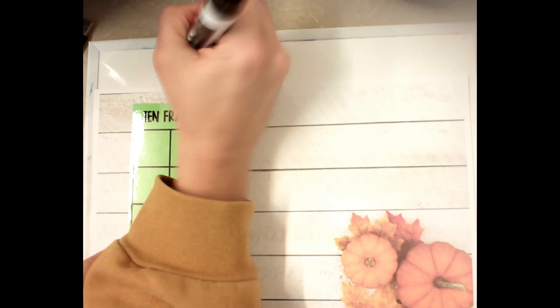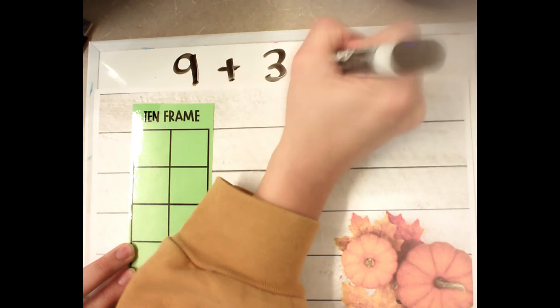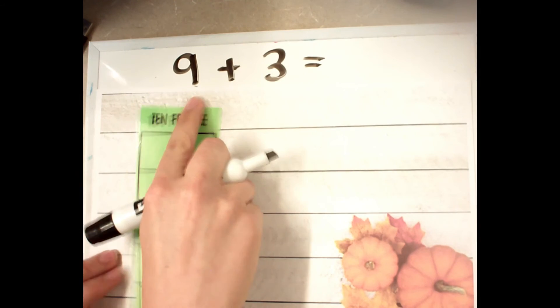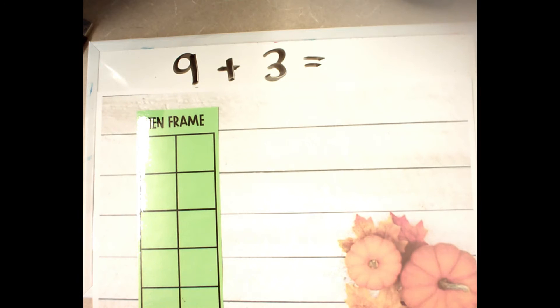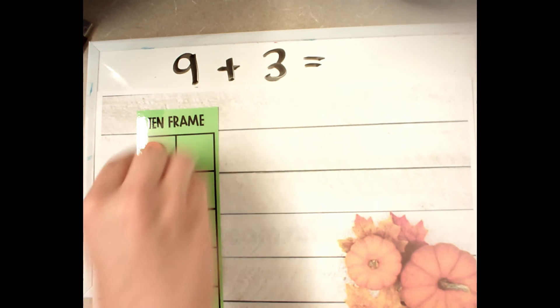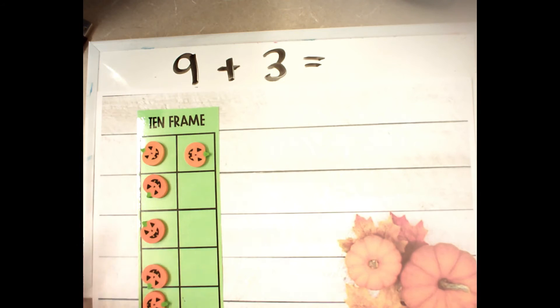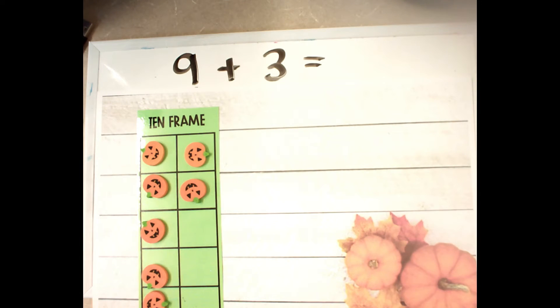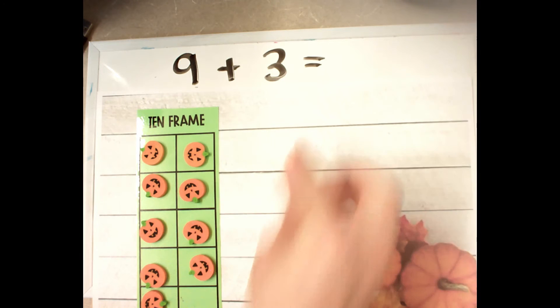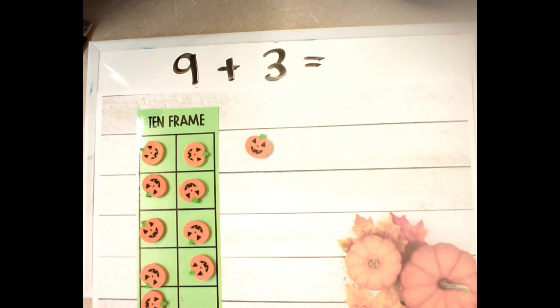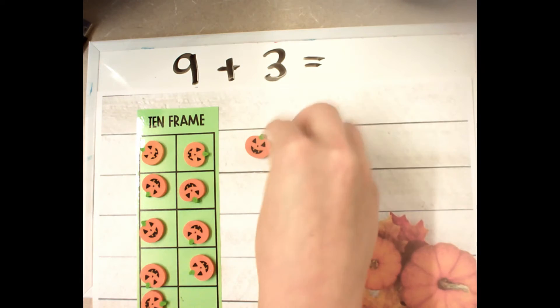If I had a problem like 9 plus 3, then we know 9 is really close to making a friend of 10, isn't it? We just know that. So let me fill up my 9 here: 1, 2, 3, 4, 5, 6, 7, 8, 9. Now over here, I'm going to put my 3: 1, 2, 3.